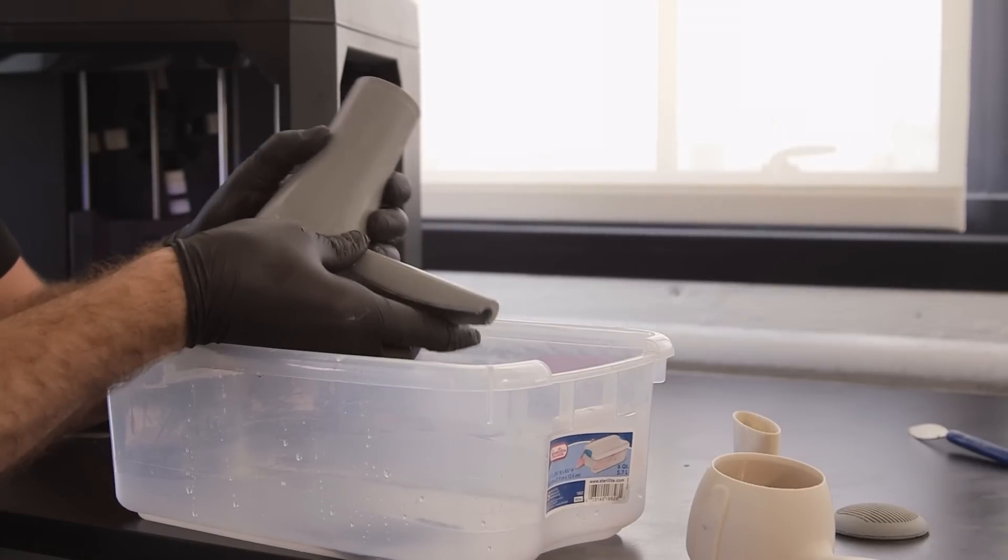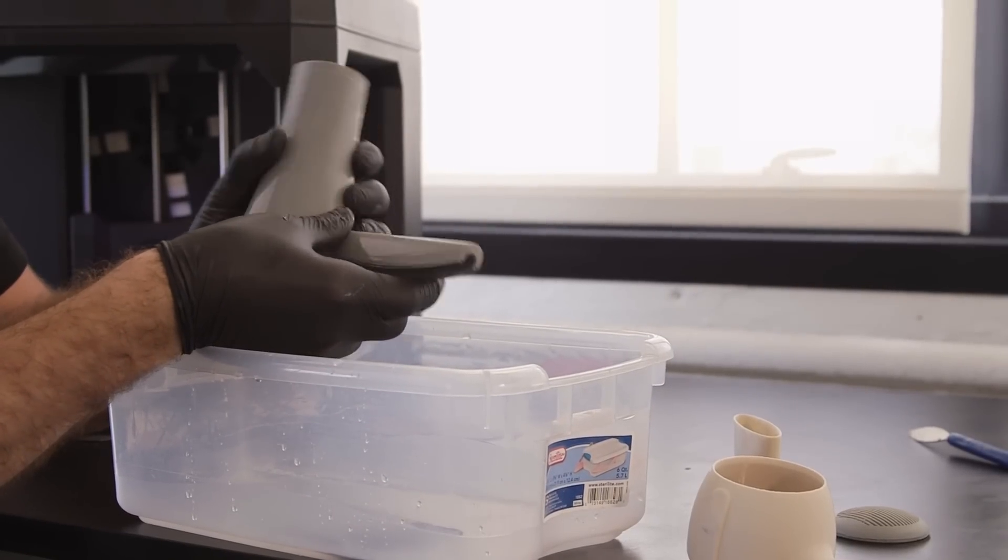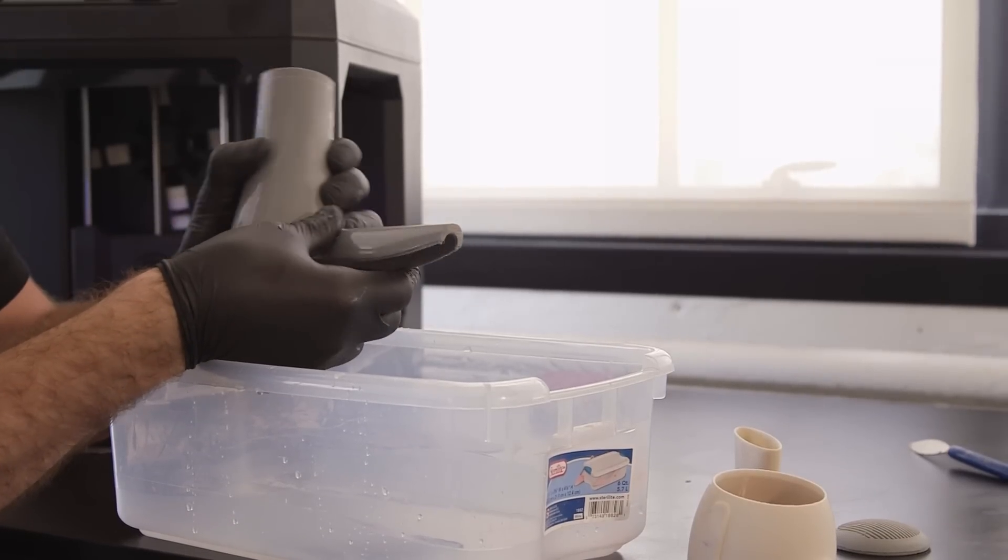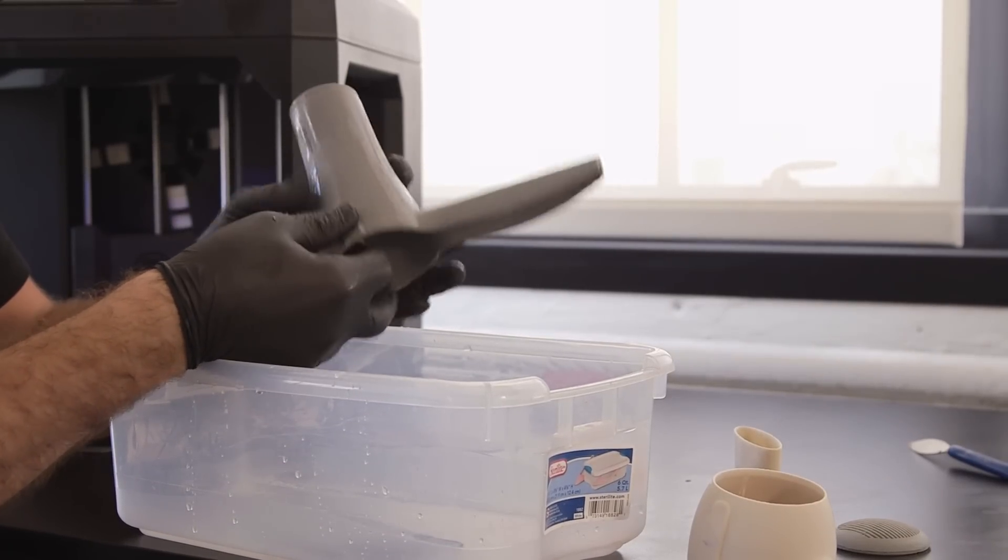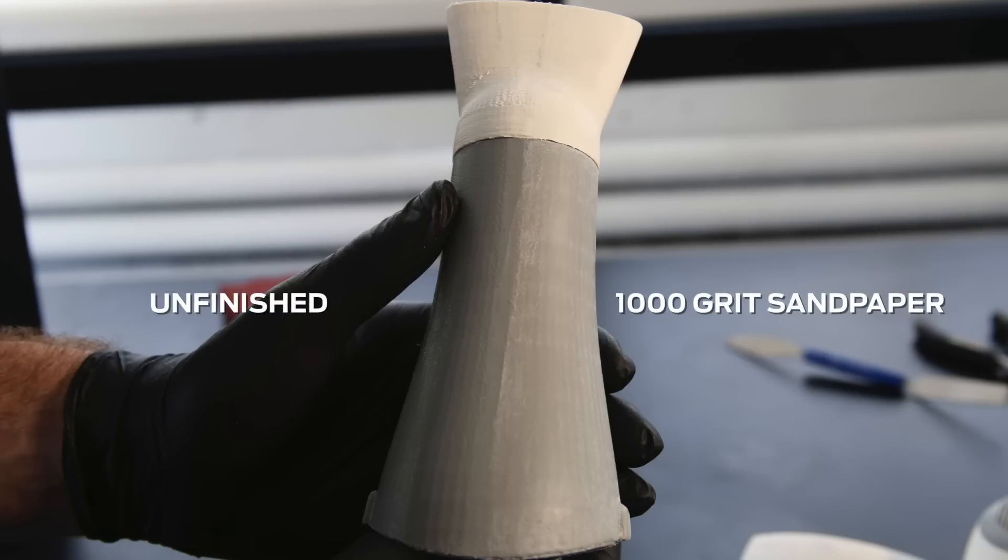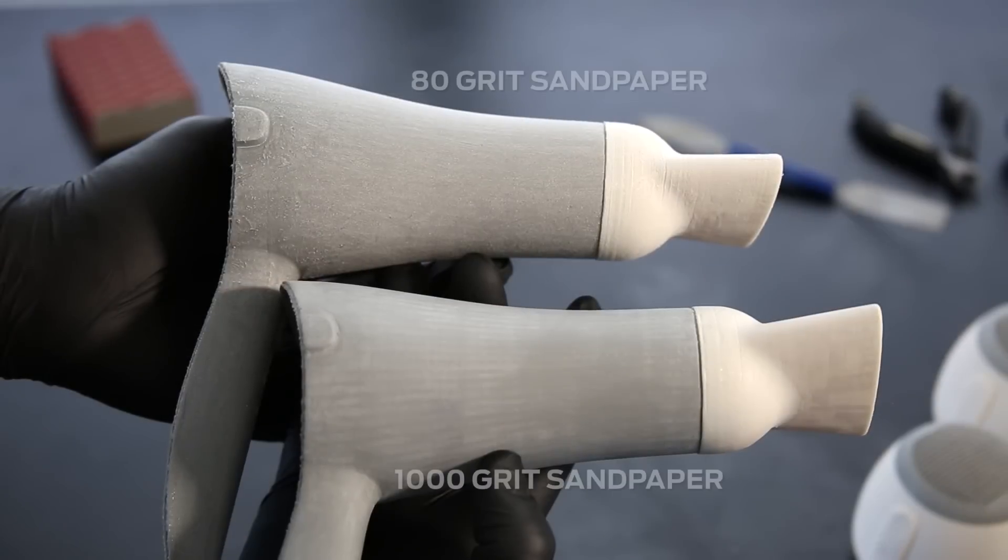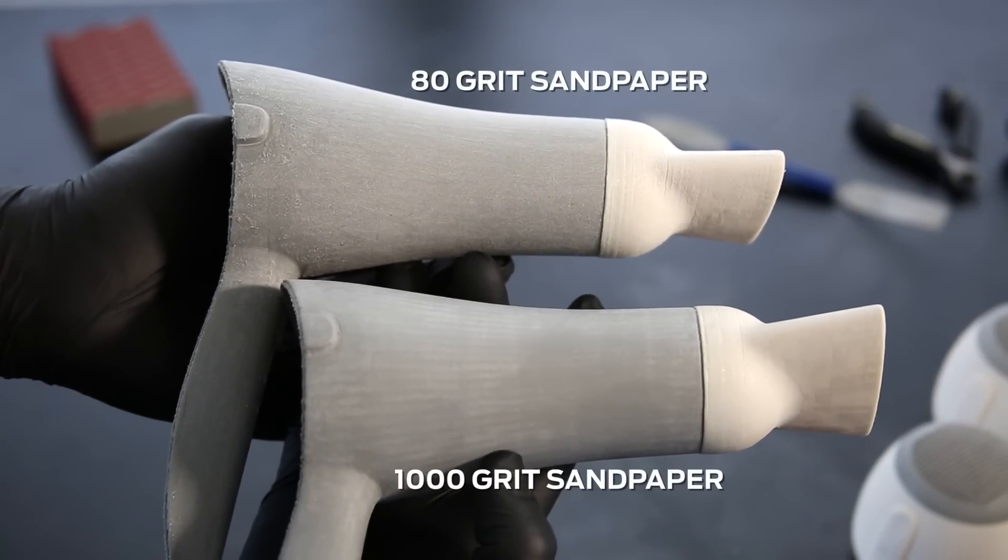If you have properly wet sanded your model, it should feel almost like glass, which is the perfect surface texture if you choose to paint your model. Here we have an example of the same model in various stages of sanding. You can see noticeable changes in surface quality at each grit level.